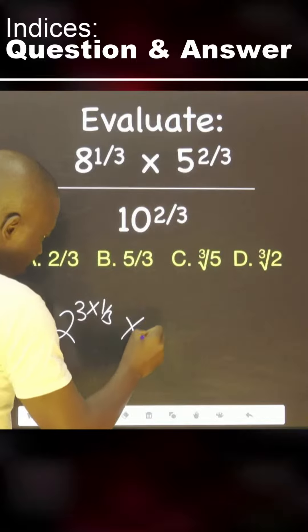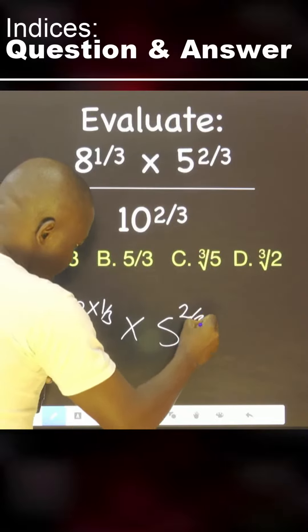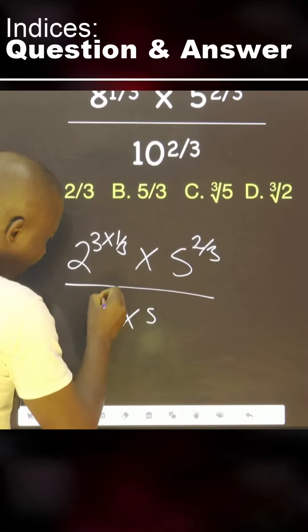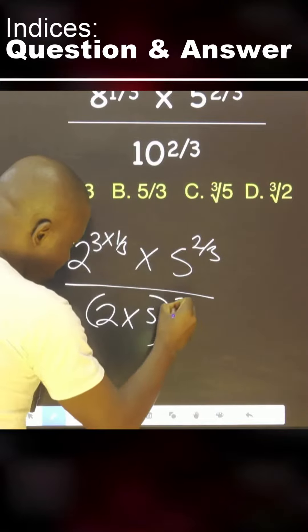Okay. This one. What about this? This means 2 times 5. This is 2 over 3.